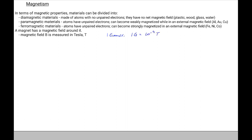When measuring the magnetic field of the Earth, for instance, the magnetic field of the Earth is very small, so we would use the Gauss units rather than the Tesla units.